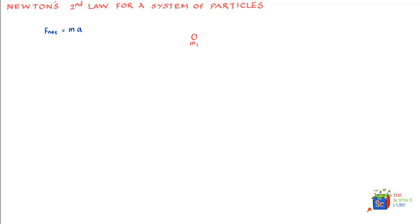So let us say you have three masses — mass m1 over here, mass m2 over here, and another mass m3 — and let us say each of these masses is subjected to a different force. So the force on m1 is f1, on m2 is f2, and on m3 is f3. Then Newton's second law of motion says that you can apply this equation to this system of masses as well, with a couple of conditions.